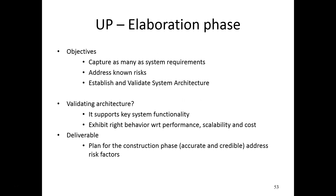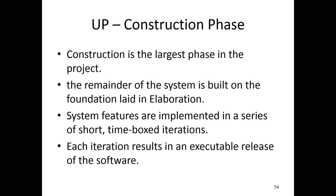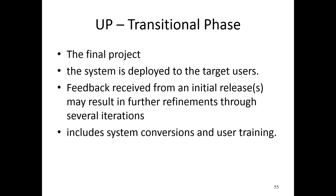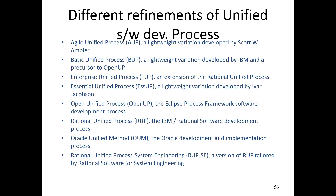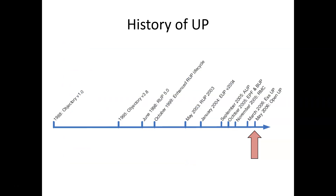The elaboration phase objectives: capture the system requirements, identify unknown risks, establish and validate system architecture, and support key system functionality. The construction phase is the largest phase — system features are implemented in short time-box iterations, and each iteration produces an executable release. The transition phase delivers the final product to users, gathering feedback and providing user training. Refinements of the Unified Process include the Agile Unified Process and the Basic Unified Process, among others. The history of UP: it started in 1988 and by 2006 OpenUP was released as a version.